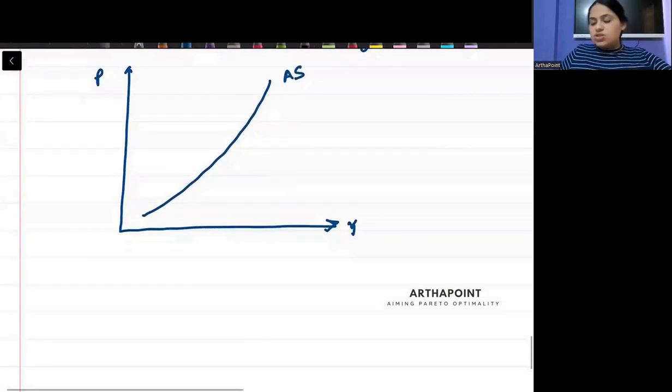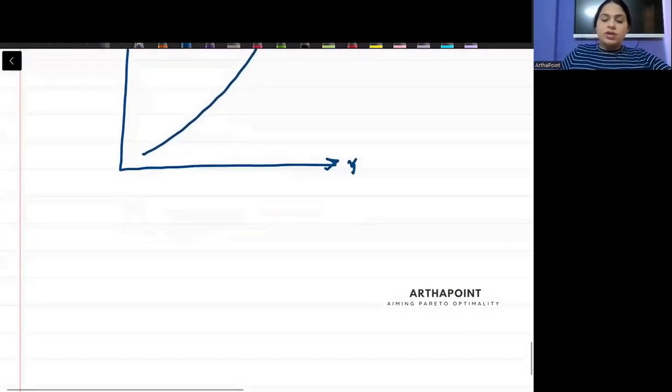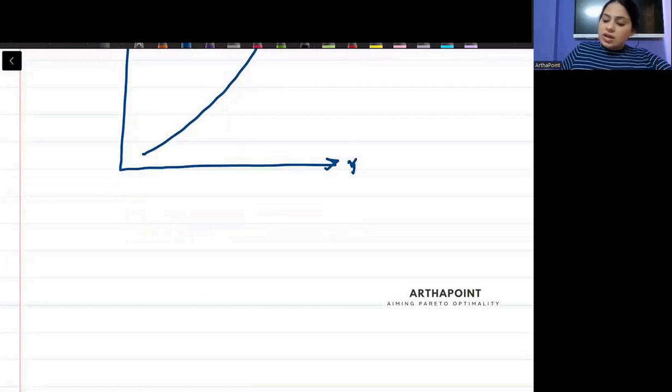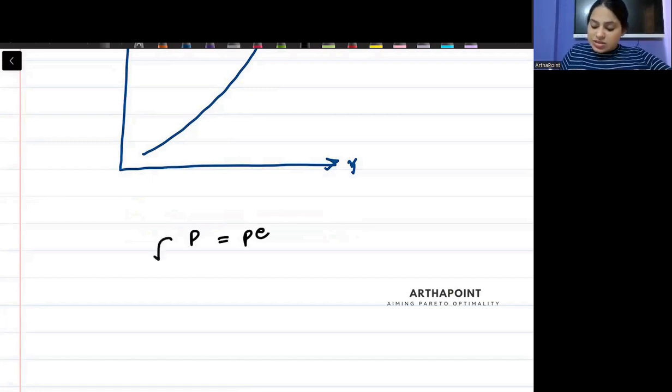Just try to think about the economy. You remember that we assumed in the last chapter that price is equal to expected price. When price is equal to the expected price, in that case, people are forming the correct expectations. People know exactly what the price is going to be.